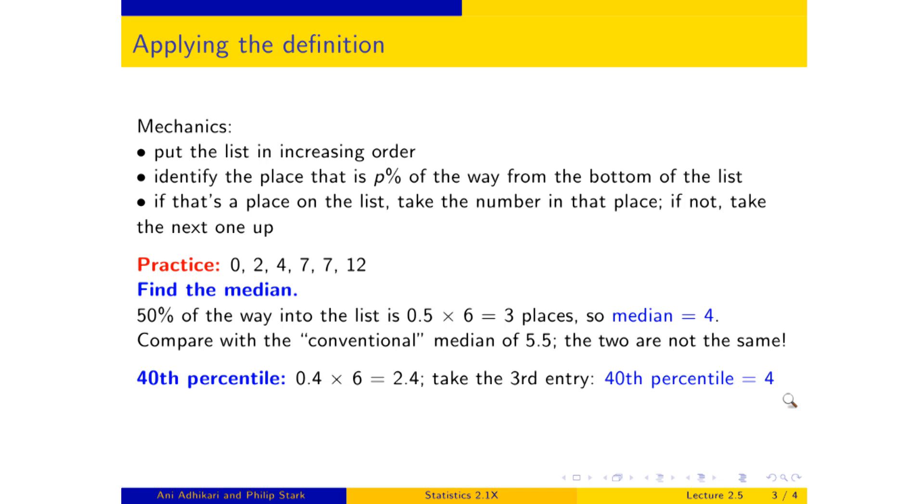And while we're about it, you should check that if you look at the 60th, the 70th, and the 80th percentiles, they're all 7. Shall we try the 80th? 80% of 6, 0.8 times 6, is 4.8. So that's in between here and here. And so the rule says take the next one up, and there you've got 7. And what you're seeing here is that the definition has taken into account the fact that a list may have ties. A tie is when two numbers are the same. And that percents of entries aren't necessarily whole numbers, and so you've got to account for that.